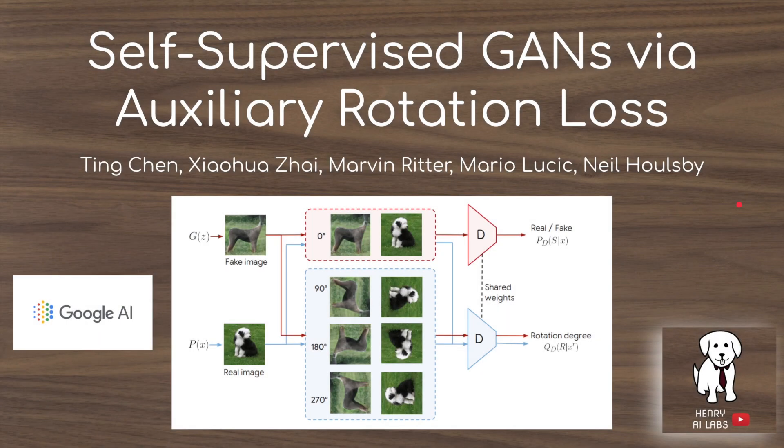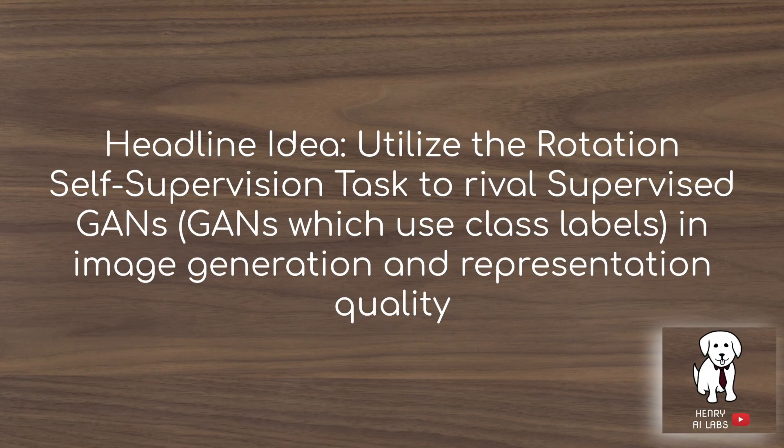This video will explain a study on using self-supervised learning with GANs to stabilize training and prevent catastrophic forgetting and cyclic problems with training GANs. The headline idea is that this paper utilizes the rotation self-supervision task to rival supervised GANs, where you use the class labels on GANs.